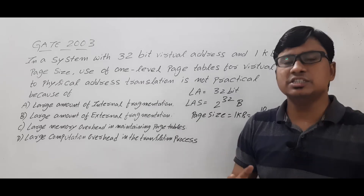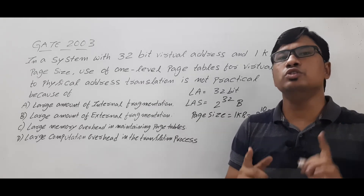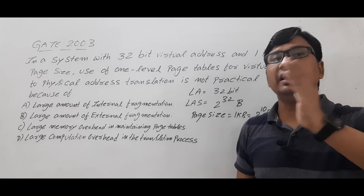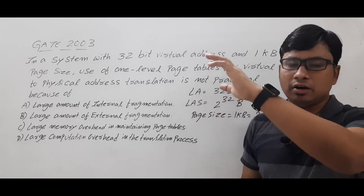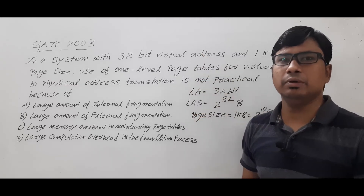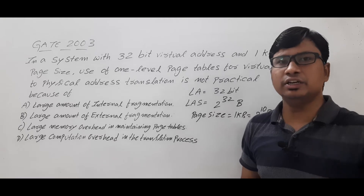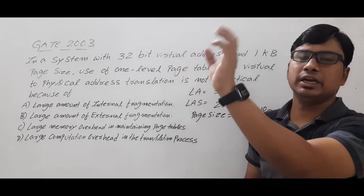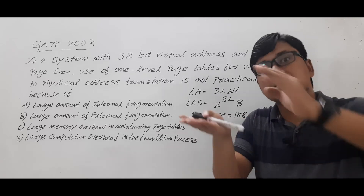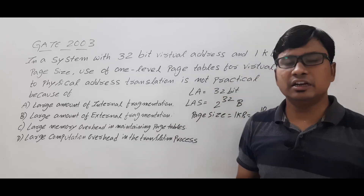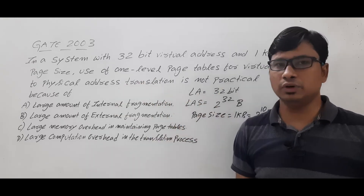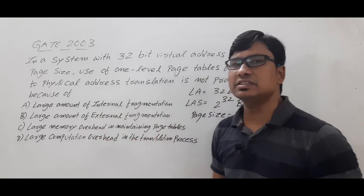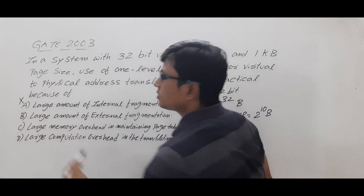When it comes to non-contiguous memory allocation — paging — the page size is equal to the frame size, so there is no possibility of internal fragmentation. Internal fragmentation is only possible if the frame size is greater than the page size. The process is logically divided into pages and main memory is divided into frames; frame size always equals page size. So one page fits exactly in one frame, and internal fragmentation is not at all possible. Therefore option A is wrong.